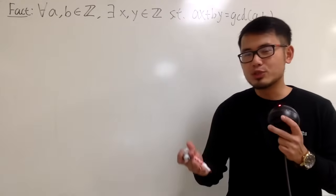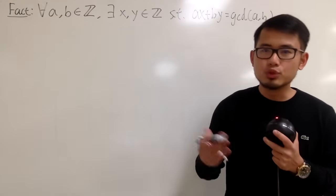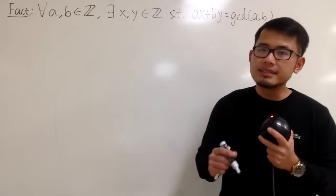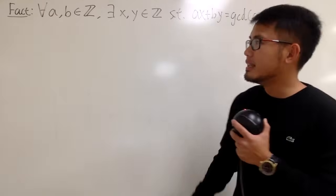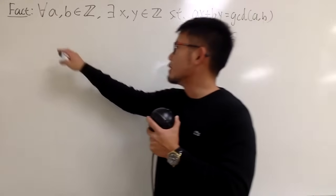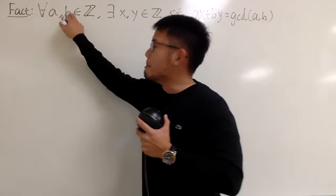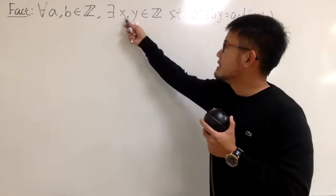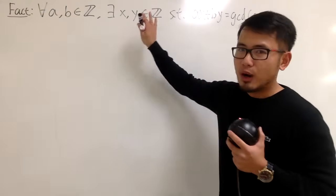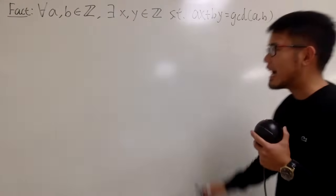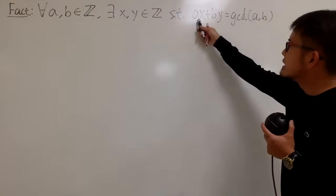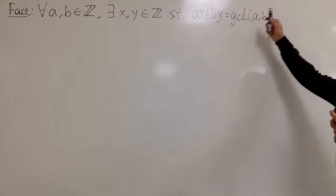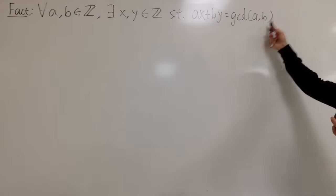In this video, I'm going to demonstrate one of the most useful facts in number theory. When you give me any two integers — let's call them a and b — we are always able to find x and y, which are also integers, such that ax plus by is equal to the greatest common divisor of a and b.